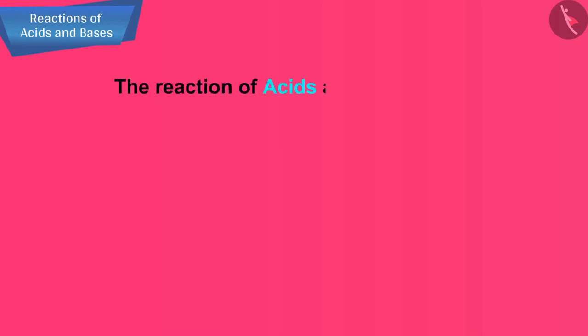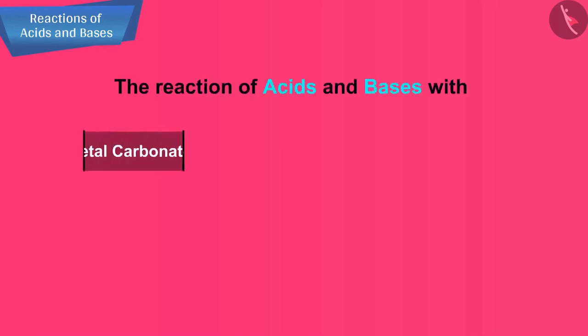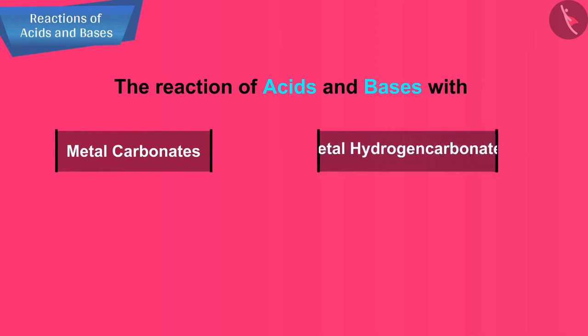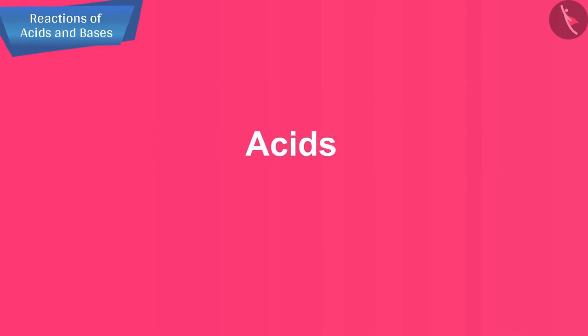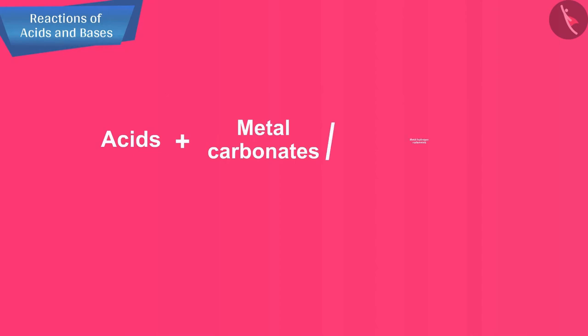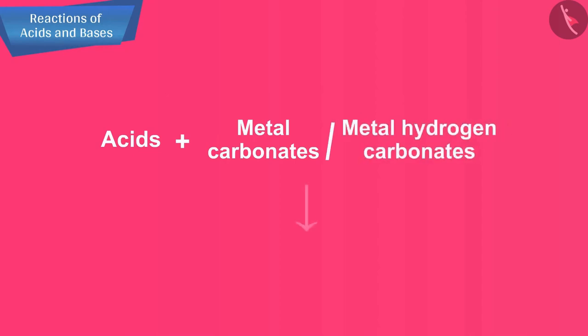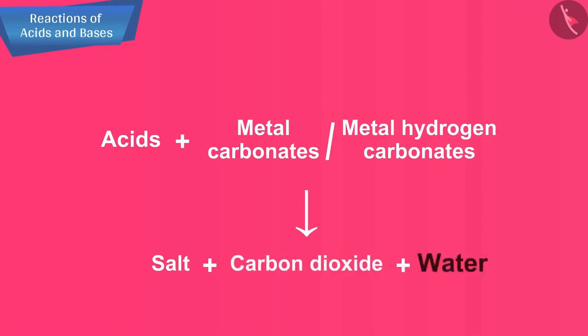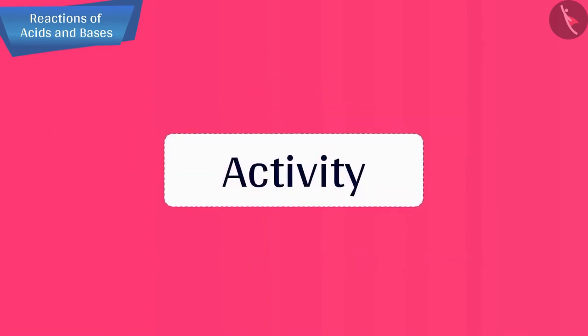Let us now move ahead and discuss the reaction of acids and bases with metal carbonates and metal hydrogen carbonates. First, we will discuss about acids. Acids react with metal carbonates and metal hydrogen carbonates to form salt, carbon dioxide and water. Let us understand this by an activity.